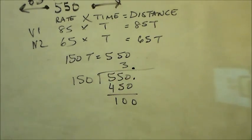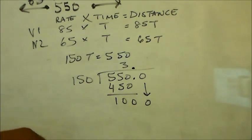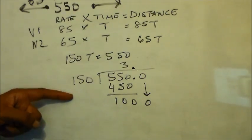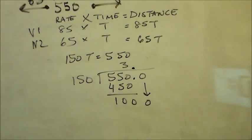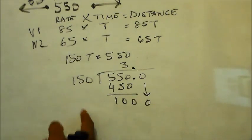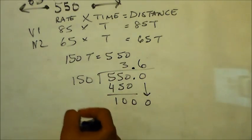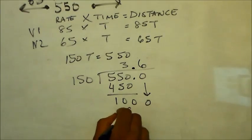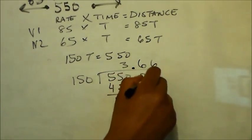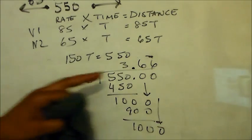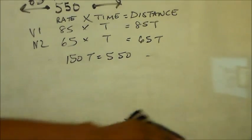Since we have a remainder of 100, we have a decimal. We need to see how many times 150 goes into 1,000. Multiplying 150 by 6 gives 900, leaving 100 again — so it's a repeating decimal. I would just round up: approximately 3.7 hours is how long it would take.